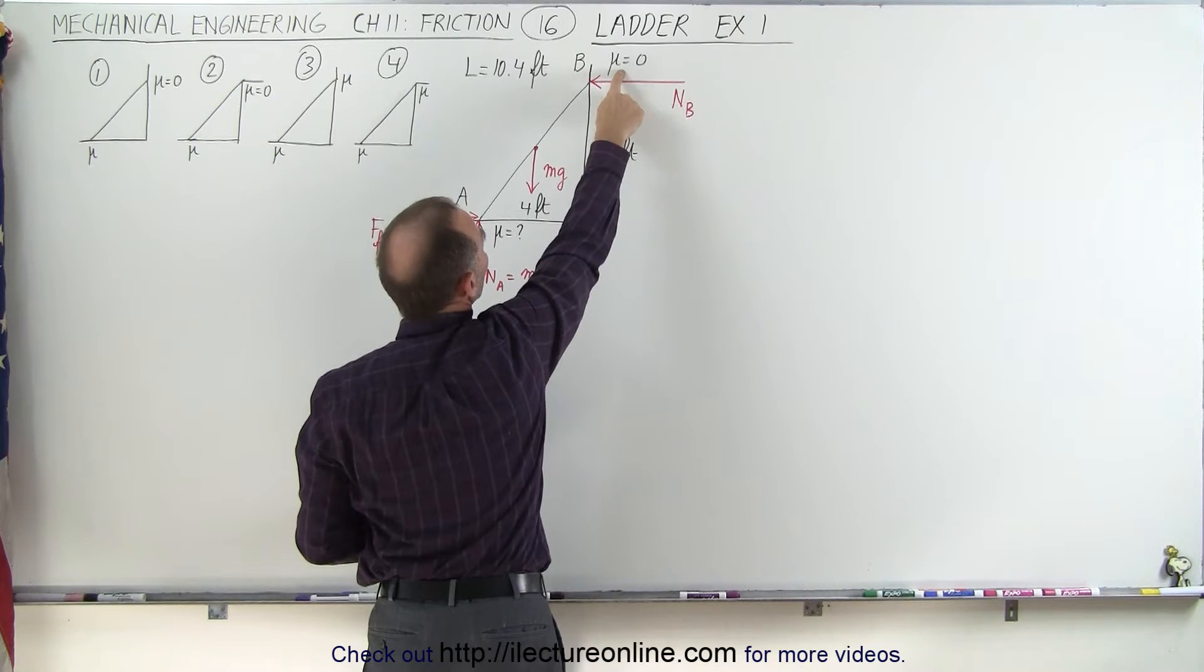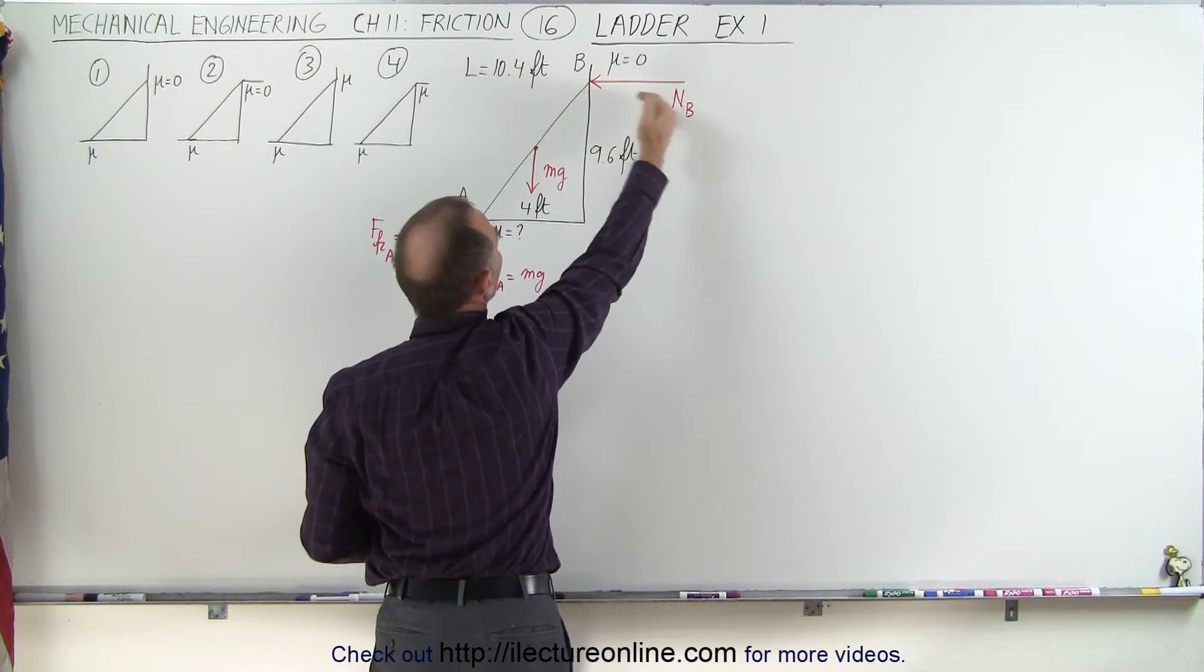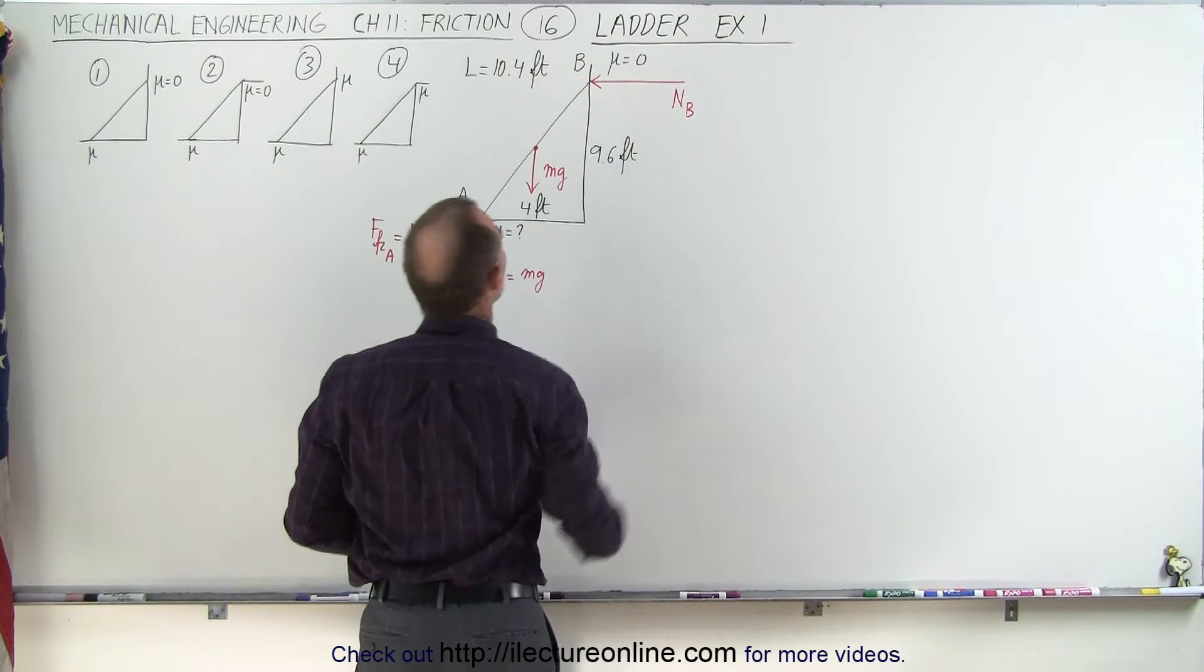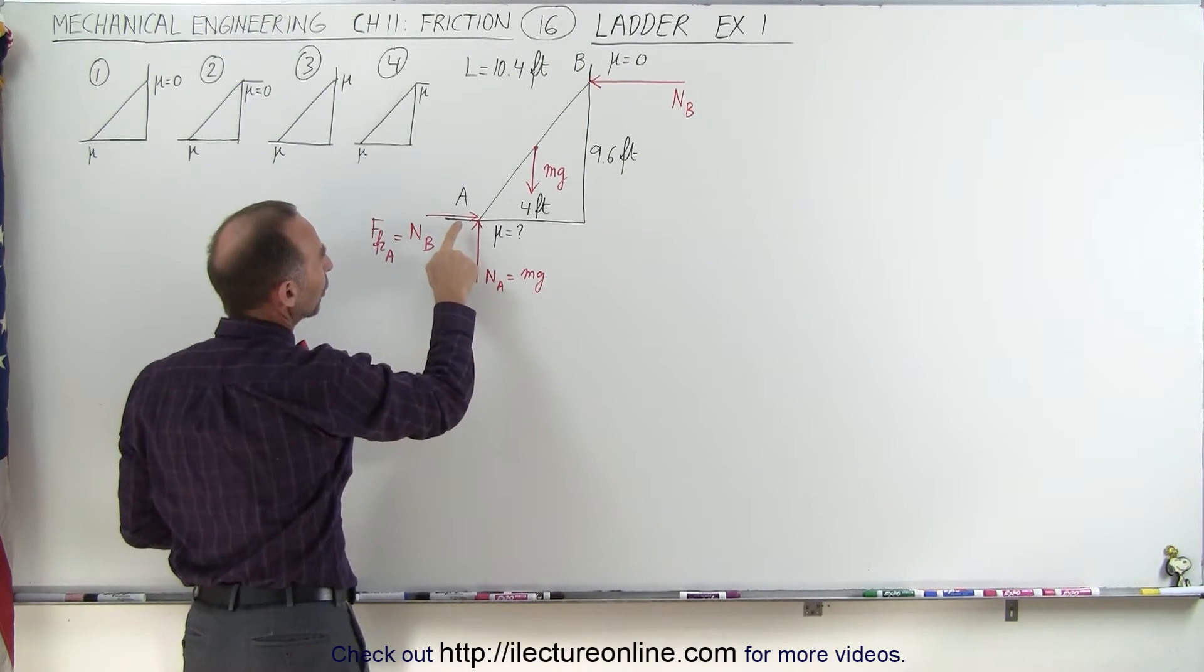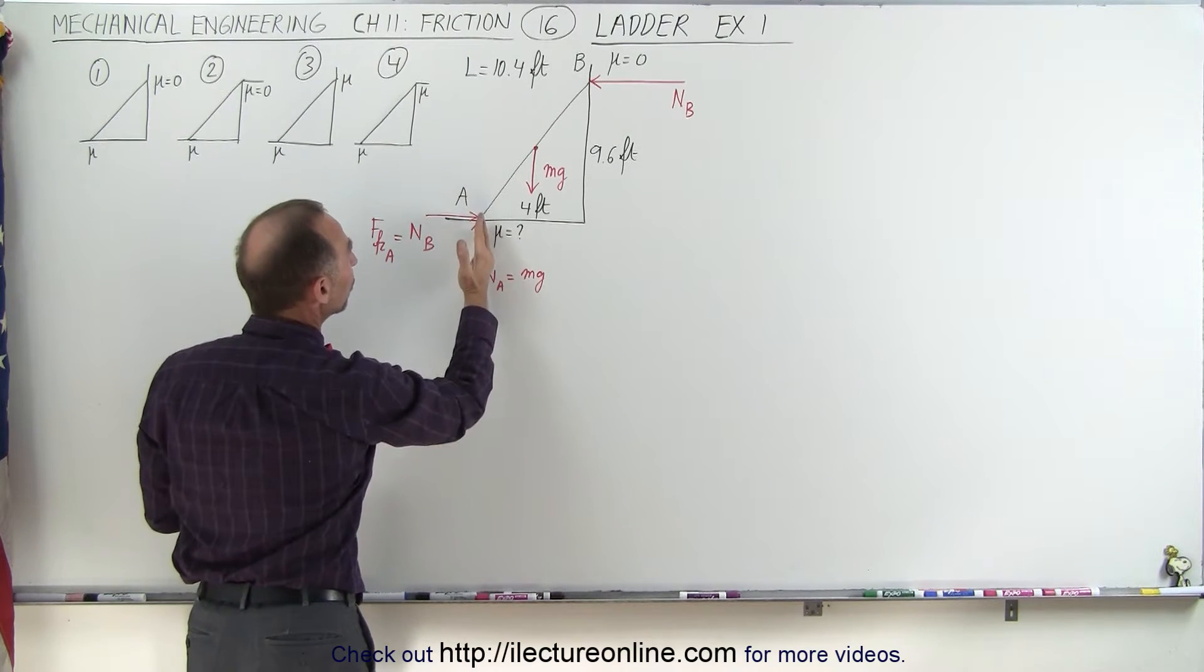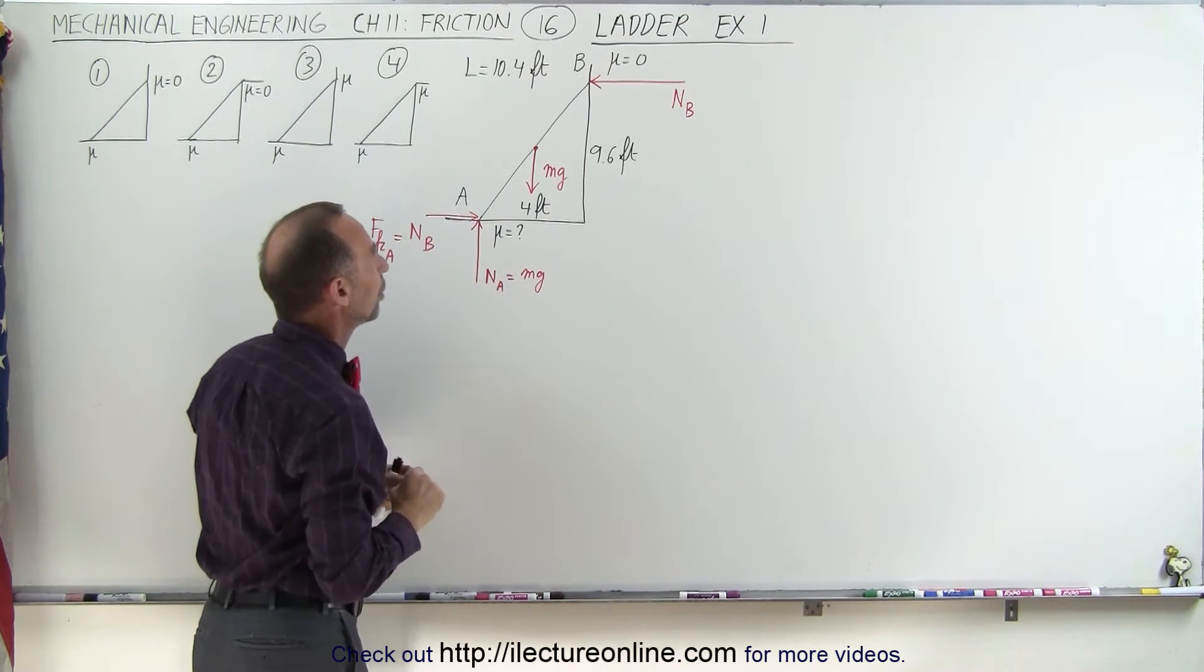Notice that since there's no friction there, there can only be a perpendicular component to the surface, that's called the normal at that point, we'll call that point B. And here we'll call the point A where there is friction, so therefore we have a perpendicular component and we have a horizontal component.